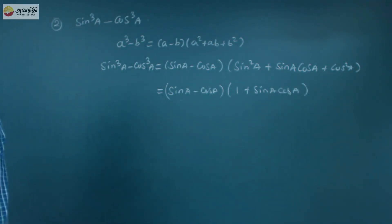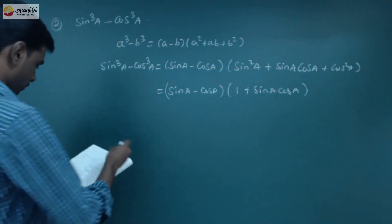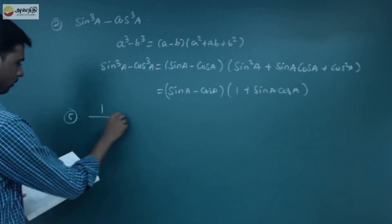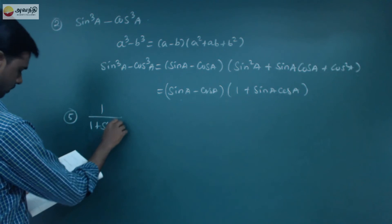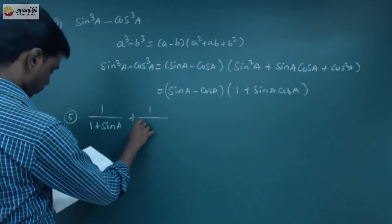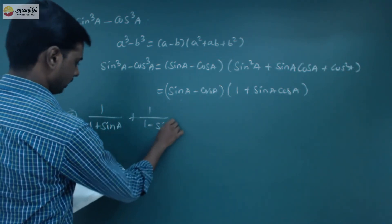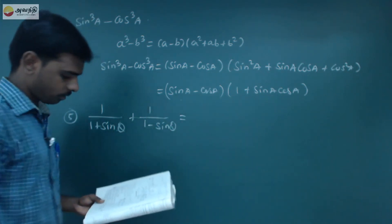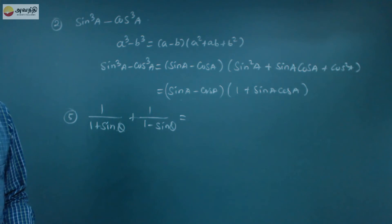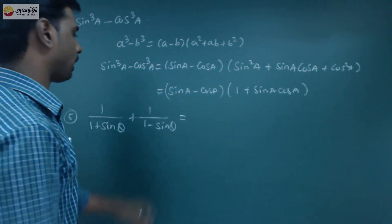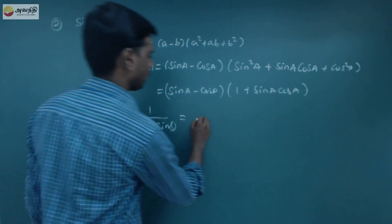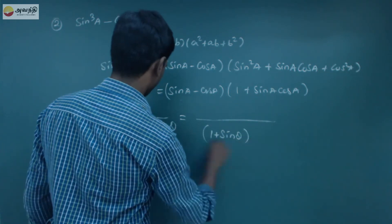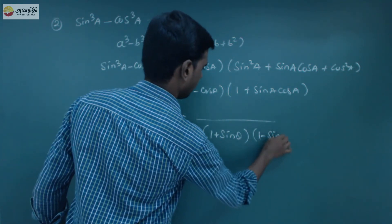So this completes the proof. Now for the fifth question, we need to prove that 1 divided by 1 plus sin theta, plus 1 divided by 1 minus sin theta, equals 2 sec square theta. The denominator is 1 plus sin theta into 1 minus sin theta.